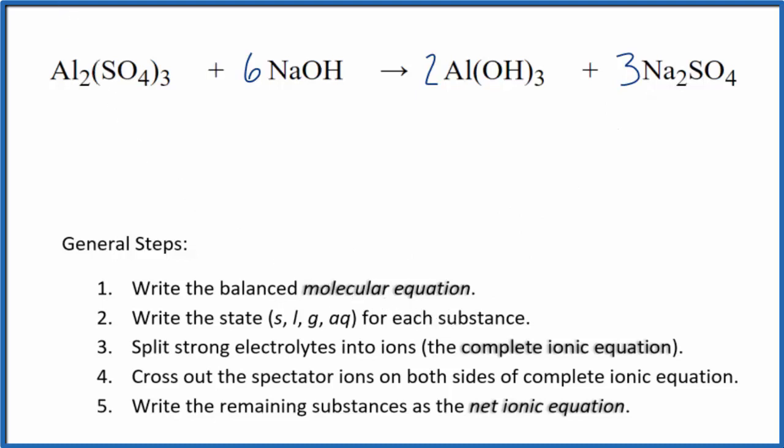Once we've got the molecular equation balanced, we need to write the states for each of the substances. Aluminum sulfate, if you know your solubility rules, is soluble or aqueous. That means it'll dissolve in water, split apart into its ions. This is also a strong base, strong electrolyte, so we know this is going to dissolve, split apart into its ions, so write aq.